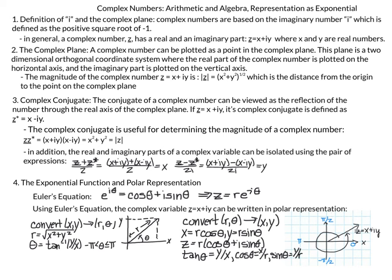The last topic we'll cover is the exponential form. The exponential form of a complex number is e to the i theta, which equals cosine theta plus i sine theta, as well as the polar representation of a complex number. From Euler's equation, we can convert from xy Cartesian coordinates to polar coordinates r theta, or we can convert from r theta to xy, using these formulas and this diagram.